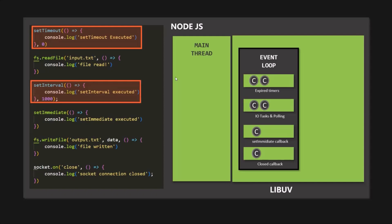All the phases are executed one by one. If a phase receives a new callback function while it is not being processed, that callback will have to wait and will be executed once the event loop reaches back to that phase. The callbacks in each queue are processed one by one until there are no callbacks left, and only then does the event loop enter the next phase. In simple words, when the callback queue of the current phase is empty, only then does the event loop move to the next phase.